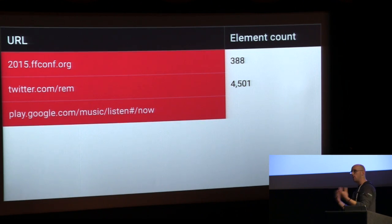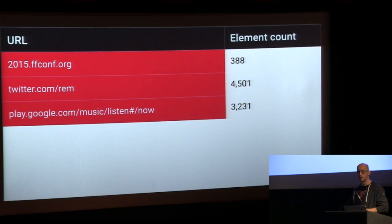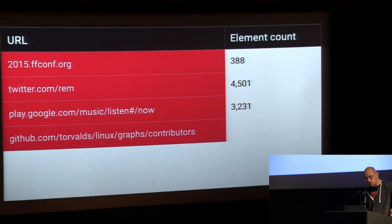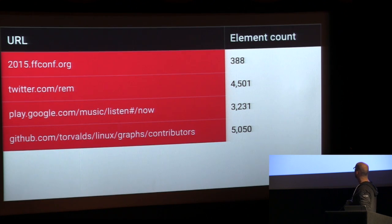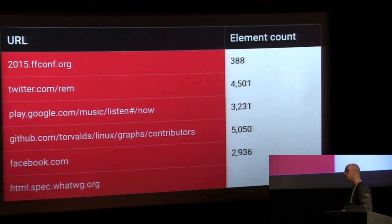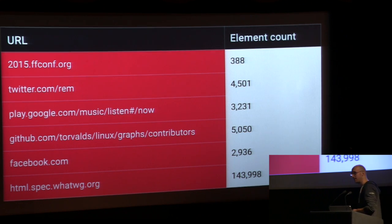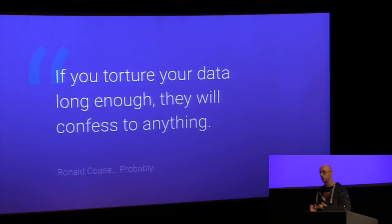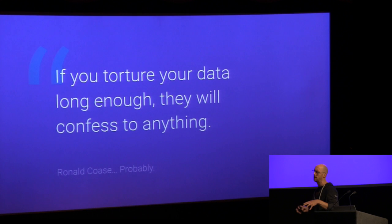The Linux contributor graph: 5,050. Facebook.com when you're signed in: 2,936. And last but not least, the HTML spec on WHATWG — 'all of them' is the correct answer at 143,000. This goes to show that if you torture your data long enough, it will confess to anything. I could have given you six sites all under a thousand, or six all over ten thousand. The key is how big is the tree you're dealing with and how much is getting invalidated.